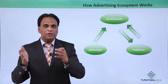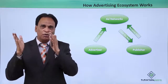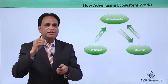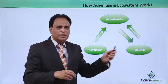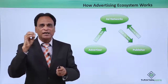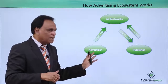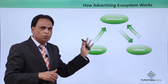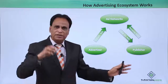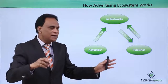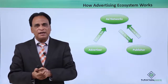The second is the publisher. The publisher is the one who has the websites or the mobile apps and who wants to display these ads so that they can monetize their mobile apps and mobile websites. Between the advertiser who puts up the ad and the publisher who displays the ad, there is one more player: they are called ad networks.